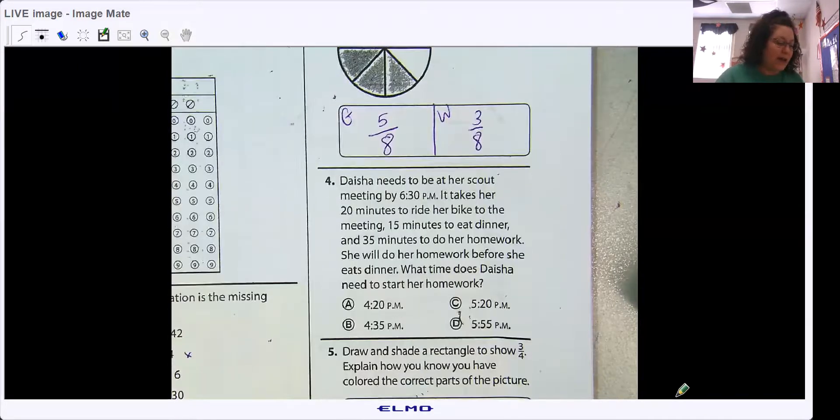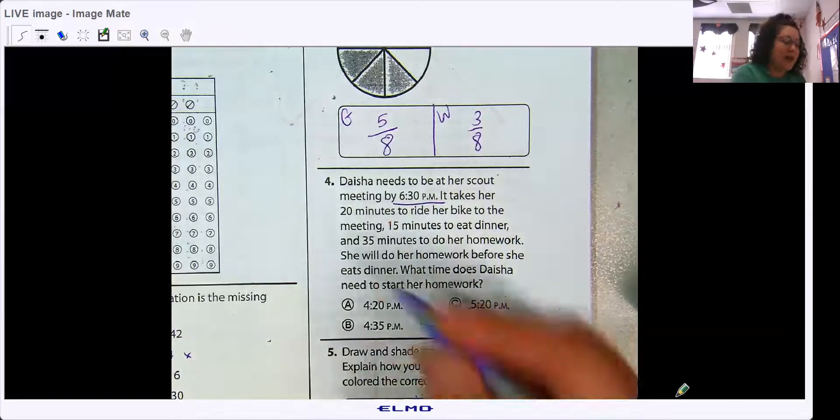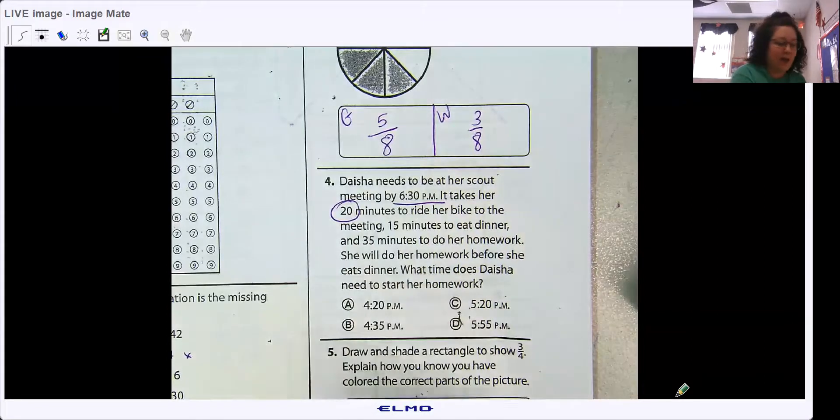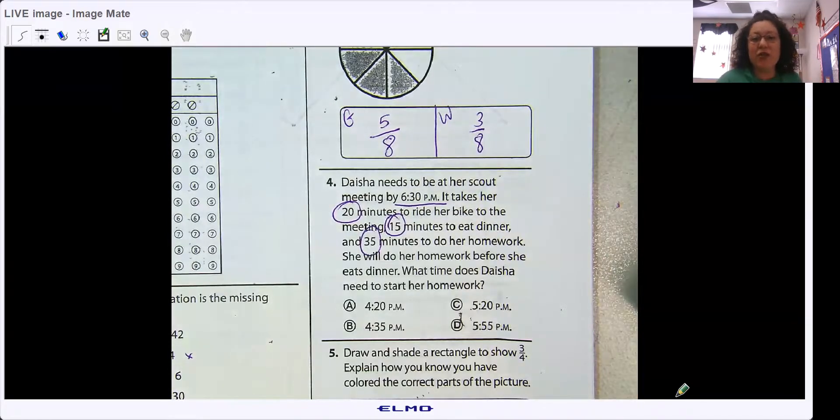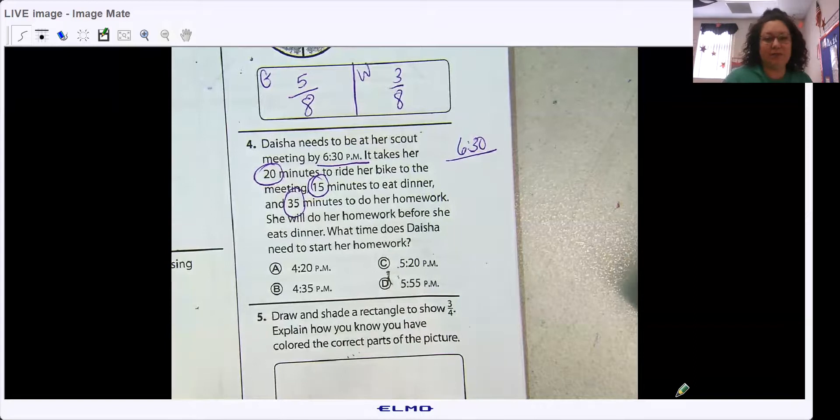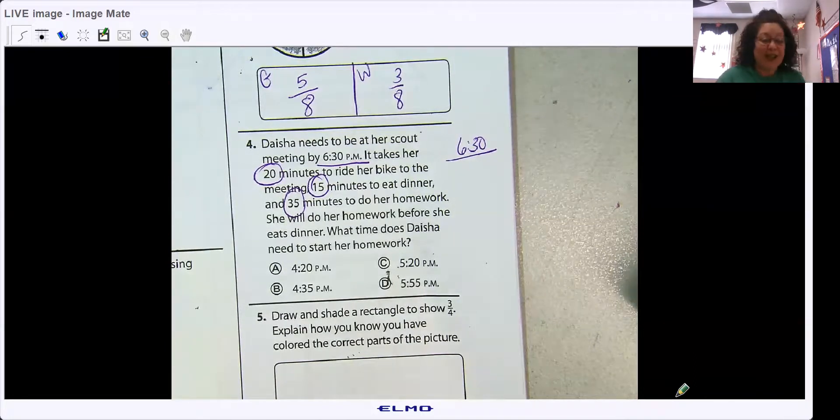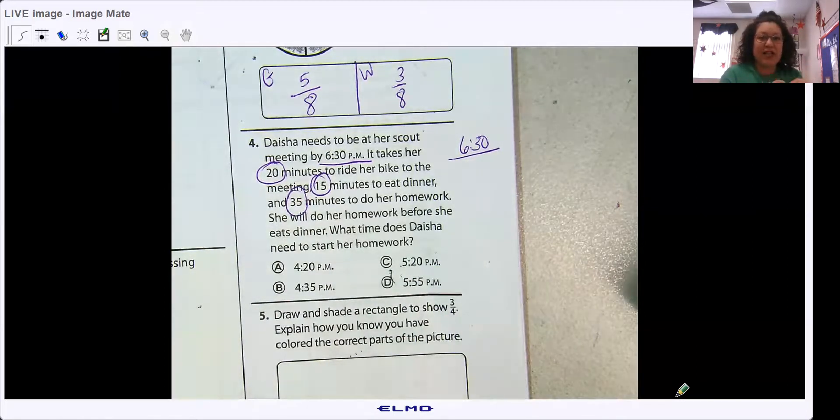All right. Number 4. Denisha needs to be at her scout meeting by 6:30. So she needs to be there by 6:30. It takes her 20 minutes to ride her bike to the meeting, 15 minutes to eat dinner, and 35 minutes to do her homework. She will do her homework before she eats dinner. What time does Denisha need to start her homework? So, we need to get to 6:30. 6:30 is our latest. What are we going to do?